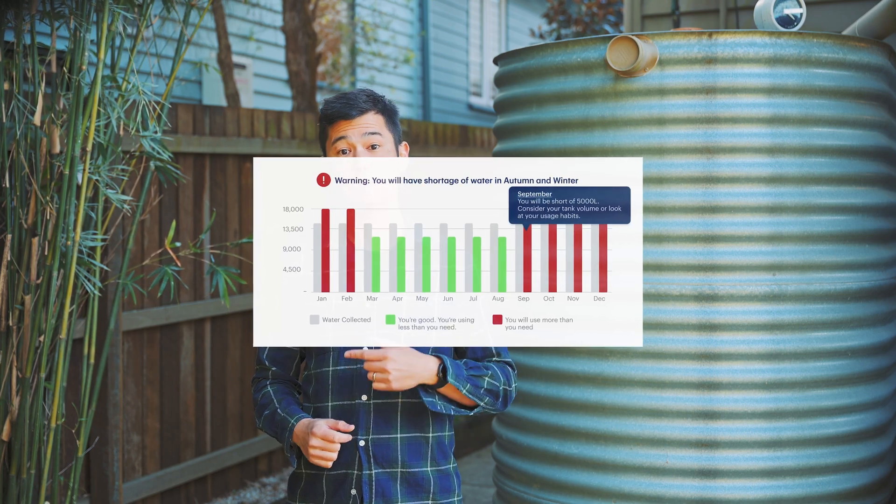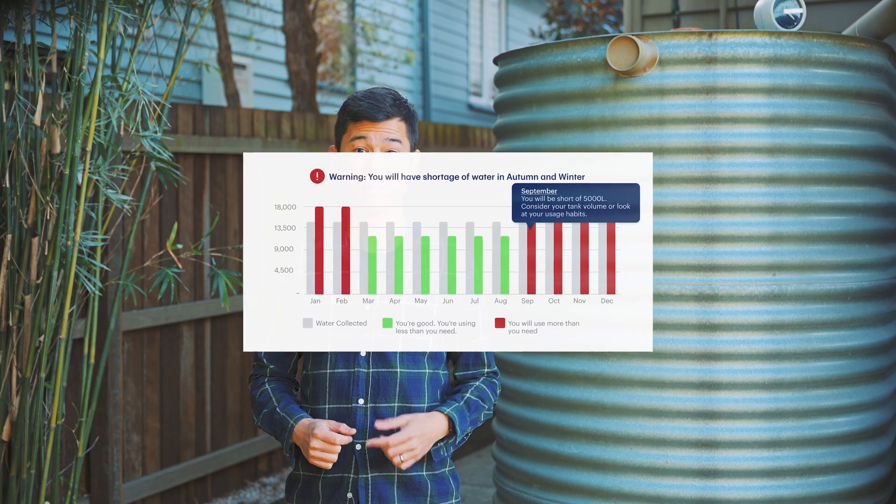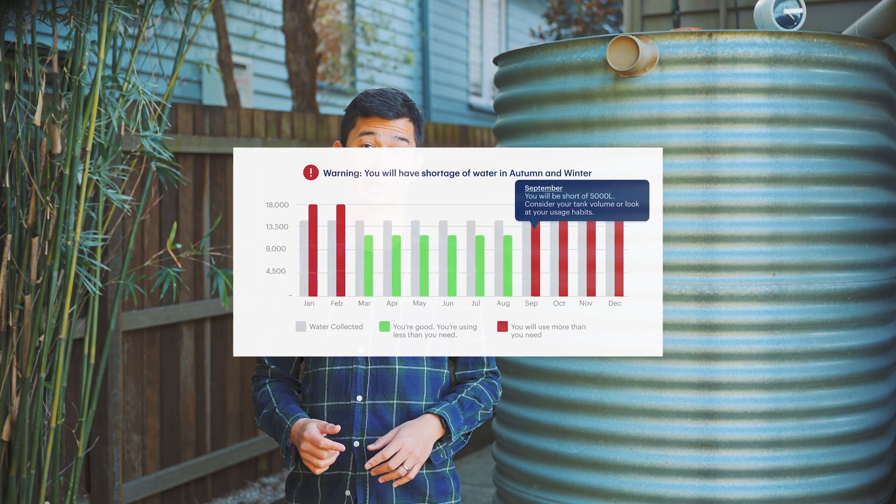Next you'll need to assess if this is enough for your needs based on your water usage. If not, then we need to increase the collection area to make up for the shortfall. If you're unsure, you can use our mass balance tool and that can help you in your calculation.